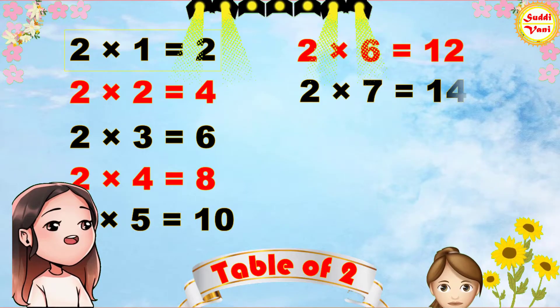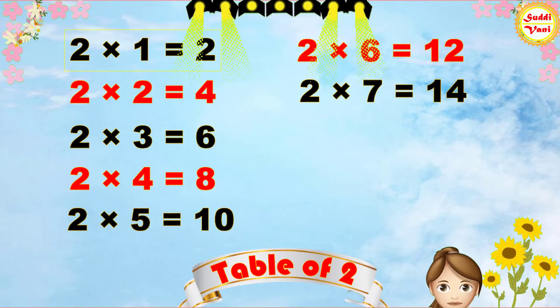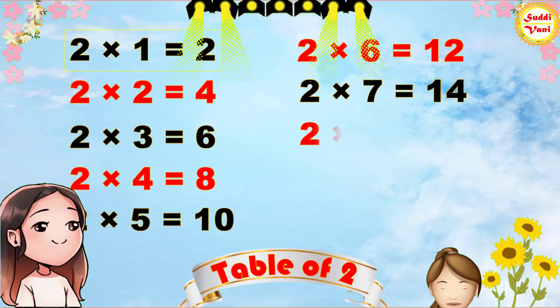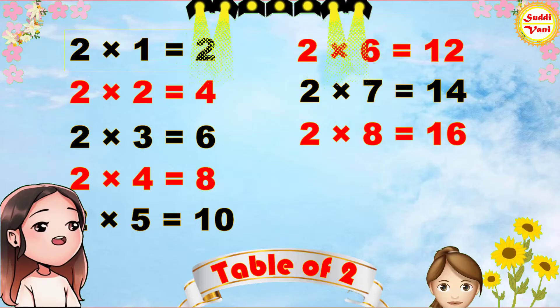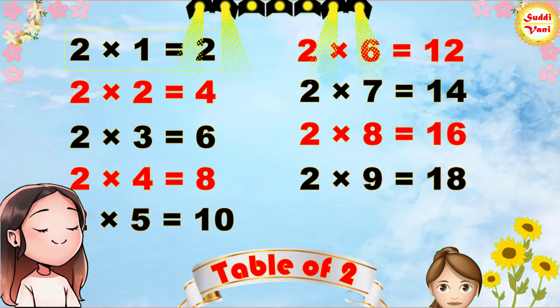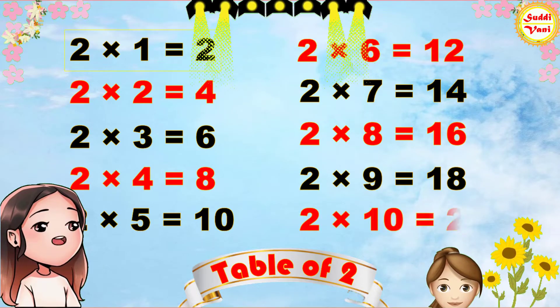2 7s are 14, 2 8s are 16, 2 9s are 18, 2 10s are 20.